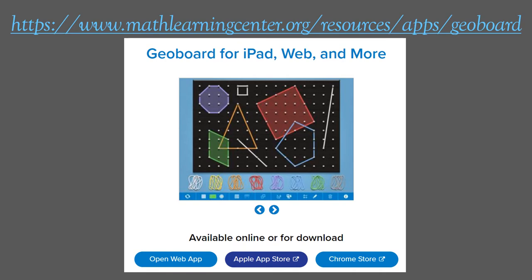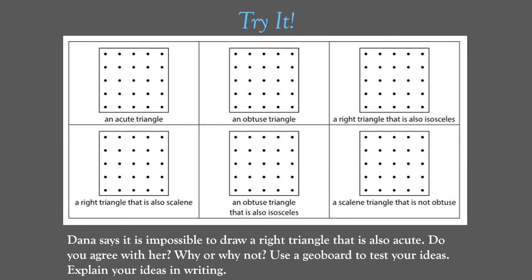For this week's try-it, we are going to make different types of triangles on a geo board. You can visit Schoology to get a hard copy, or use an interactive geo board at www.mathlearningcenter.org/resources/apps/geoboard. You can also print the geo boards from Schoology, make your own on scrap paper at home, or use the interactive geo board.